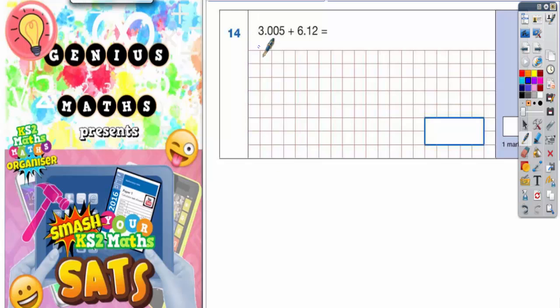Question 14: 3.005 + 6.12. Anytime you're doing addition or subtraction with two numbers that are both decimals, it is very important to line the decimal points up first.